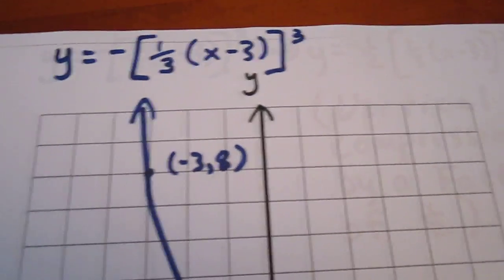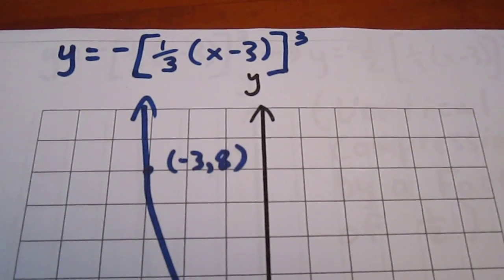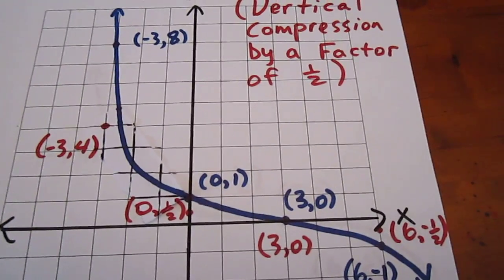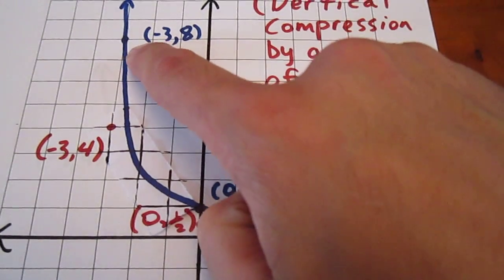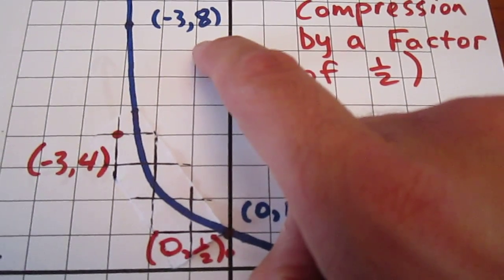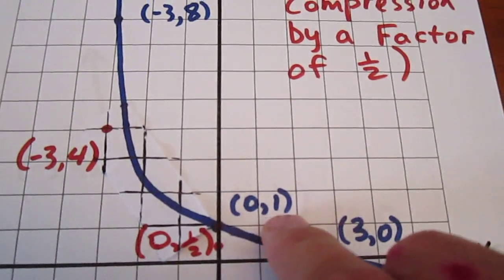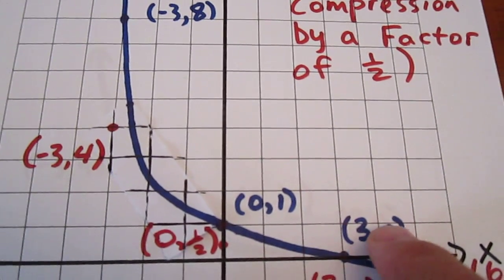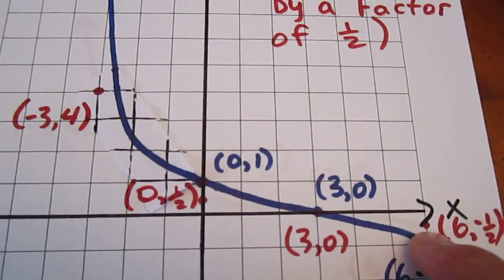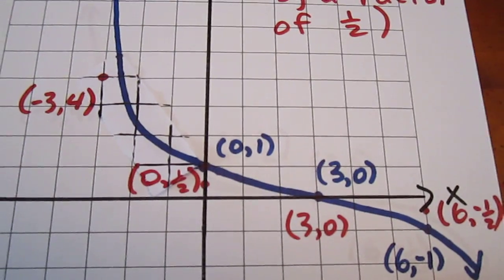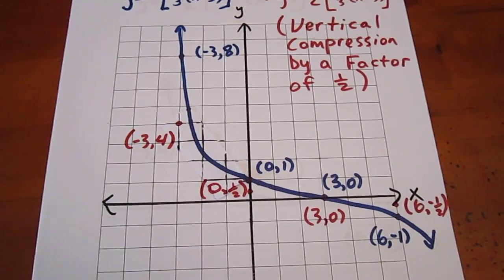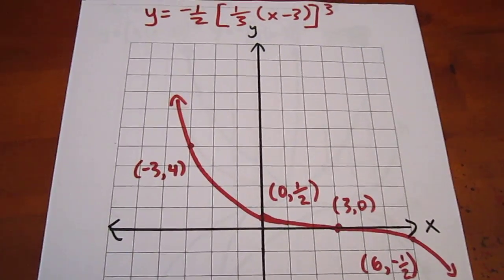That's three transformations into our four-transformation process. The last transformation is a vertical compression by a factor of one-half — we multiply each y-coordinate by one-half, bringing each point half the distance to the x-axis. Negative three eight becomes negative three four; zero one becomes zero one-half; three zero stays three zero; and six negative one becomes six negative one-half. We ignore all the blue curve and draw a curve through those red points — that is our final curve.